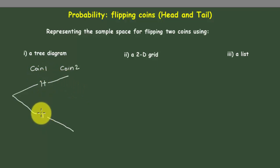For the second one we also have head and tail, and there's another possibility here with head and tail. As you can see, we're having four possibilities when we flip two coins. This gives us head-head, head-tail, tail-head, or tail-tail.